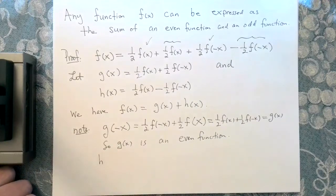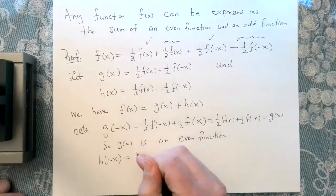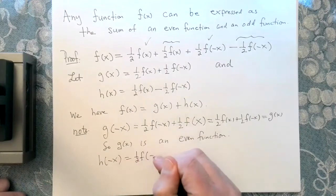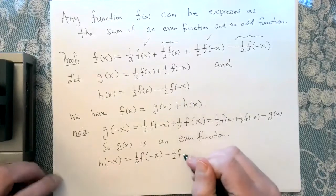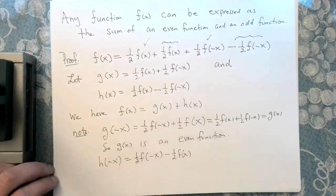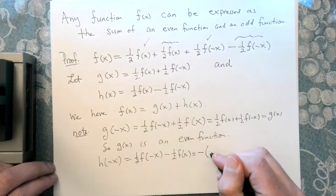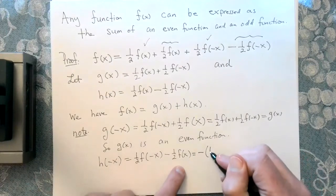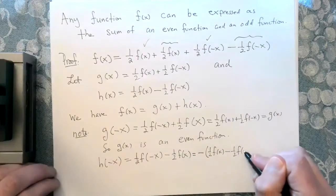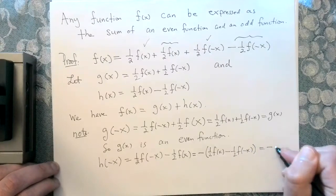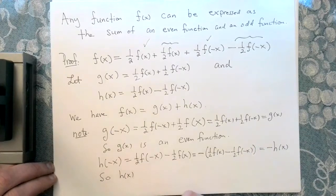And so now we investigate h(x). h(-x) is exactly one half f(-x) minus one half f(x). Then I'm going to factor out a minus. If I factor out a minus and switch the order, that gives me one half f(x) minus one half f(-x), but that's exactly minus h(x). So h(x) is an odd function by definition.